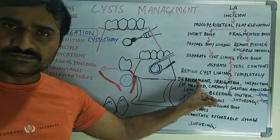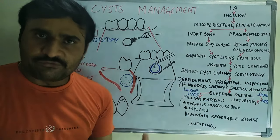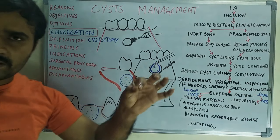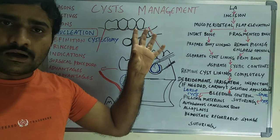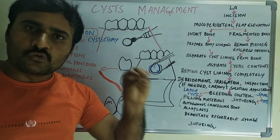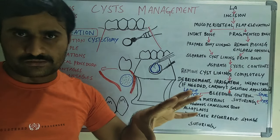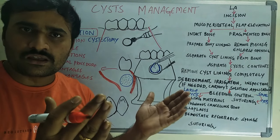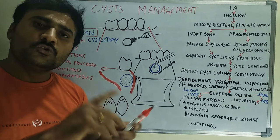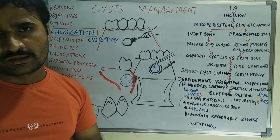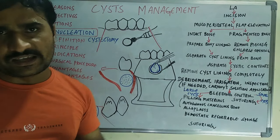After removing the cyst lining, proceed with debridement and irrigation, then inspect the cystic defect for any remnants that should be removed. In cases of maxillary cysts, check for any breakage of the maxillary sinus lining or nasal mucosa; if there is a breach, suture that mucosal lining.